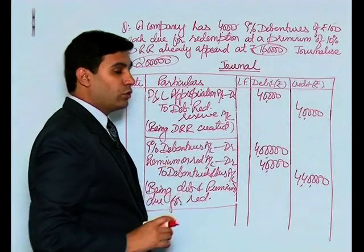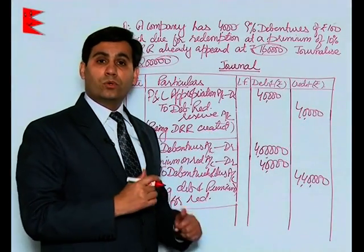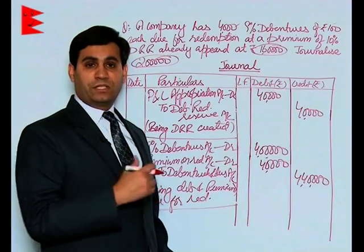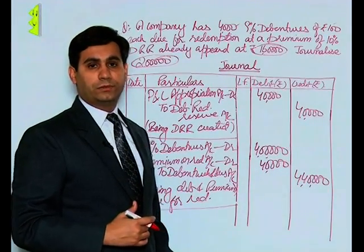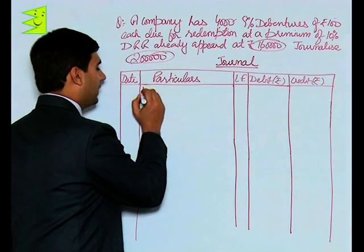Now students, total amount of 4,40,000 is due to debenture holders. So the next entry would be for payment of this amount. The entry for payment would appear like this.